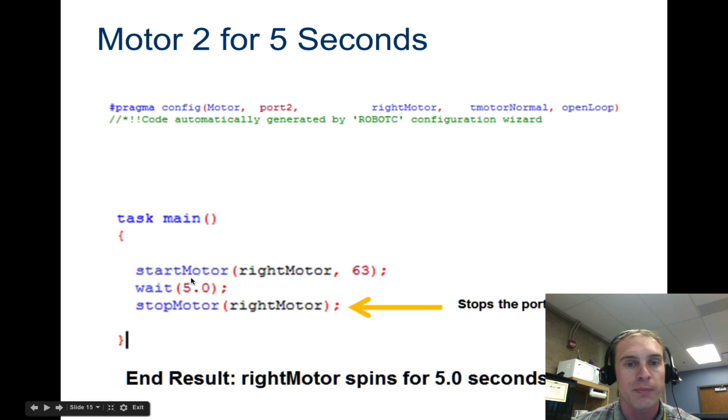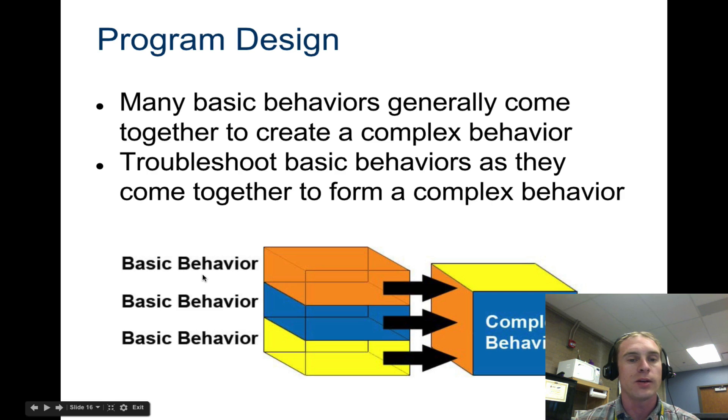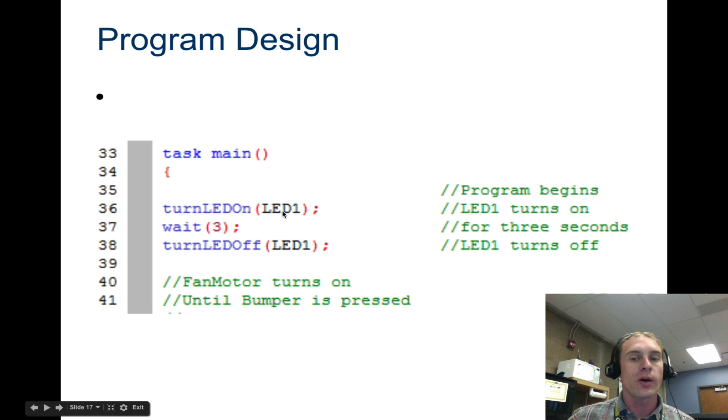So you could test this out if you wanted to. You could type that into your robot C and run it. And you would see it run for five seconds. Now program design is always done this way. You have basic behaviors and they would come together to make a complex behavior. So your basic behavior is turning the motor on for five seconds. But that might be part of a larger system. You have one motor running for five seconds while another one is flashing lights. So you've got a lot of things going on, but each one is a very simple basic behavior. So you want to troubleshoot them as basic behaviors.